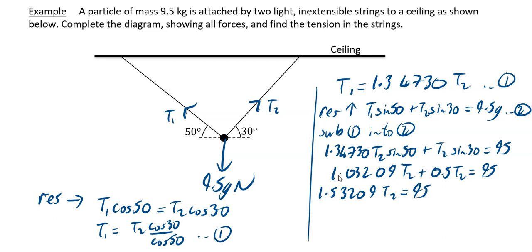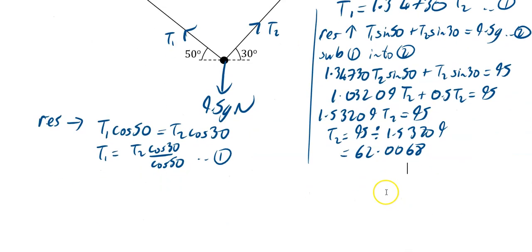And then what you want to do is just divide across. So your t2 equals your 95 divided by your 1.53209. And if I do that, what I get is 62.0068. And then we will go on from there and see what we get.